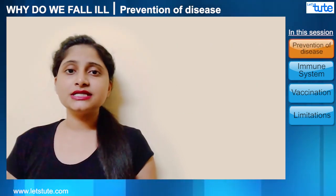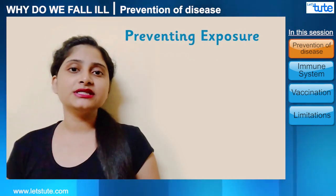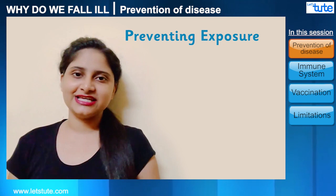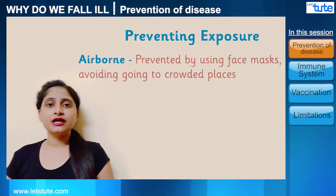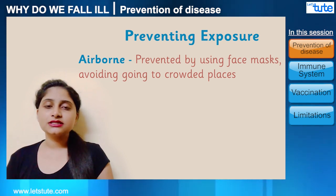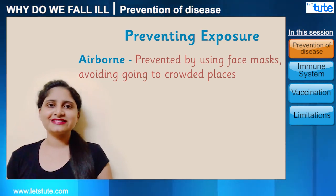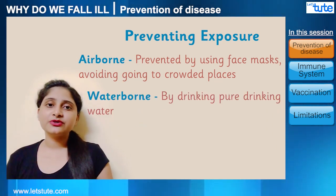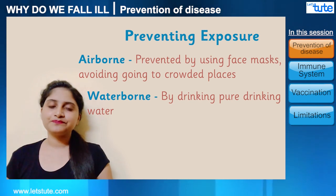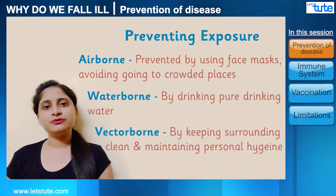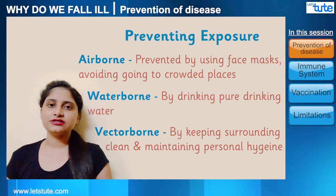Diseases can be prevented in two ways. Number one is by preventing the exposure to infectious areas. Airborne diseases can be prevented by using face masks or avoiding crowded places. Waterborne diseases can be prevented by drinking safe and pure drinking water.